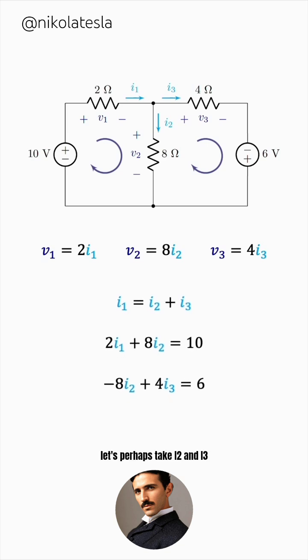Let's perhaps take I2 and I3 to the other side, so that it has the typical form of a linear system, and now we can solve it using substitution, elimination, or any other linear algebra method. We get I1 equals 3, I2 equals 0.5, and I3 equals 2.5 amperes.